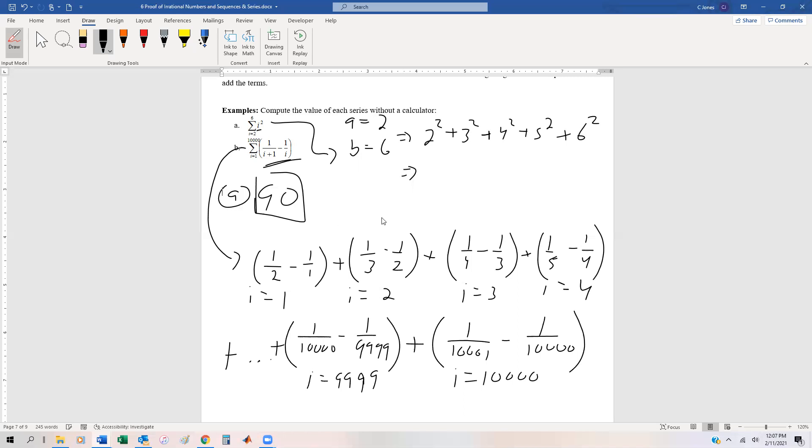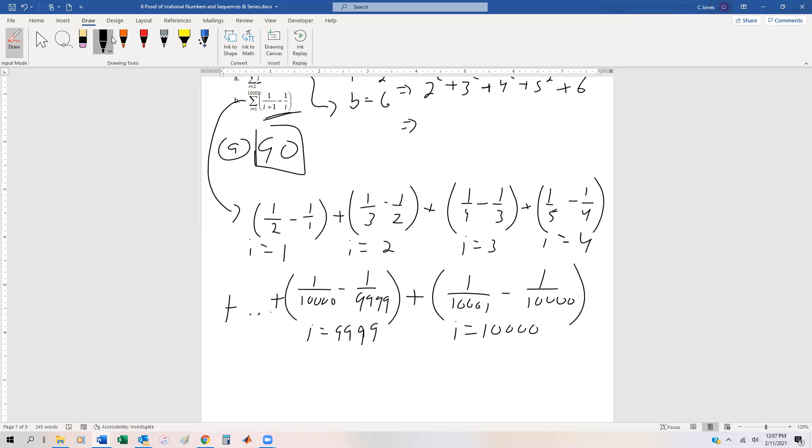Now, the trick here is to recognize that some of the terms, in fact almost all the terms, are going to cancel out. Notice in the first expression we have a half and then we have a negative one half, so those cancel out. We have a one third and negative one third. We have a negative one fourth and a positive one fourth, and that pattern is going to continue.